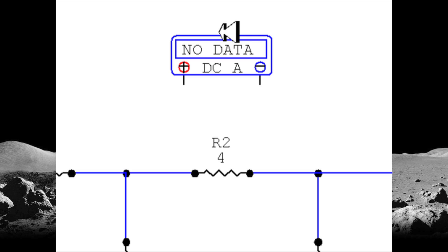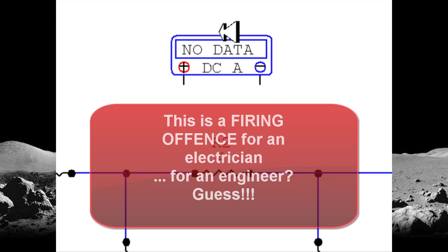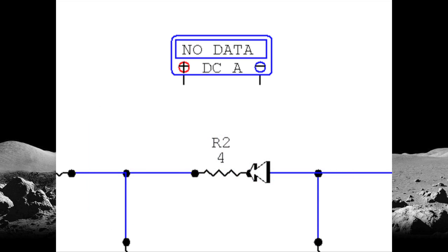Let's do it wrong now. This is something I have seen in our laboratories sometimes, and this would be a firing offense for an electrician. You never connect an ammeter in parallel with the branch you're going to be measuring the current in. But I'm going to do that anyway to illustrate a common mistake.